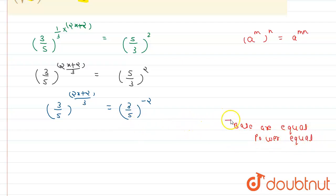Now apply this property. We get (2x+2)/3 equals -2, so 2x+2 equals -6, giving us 2x equals -8.